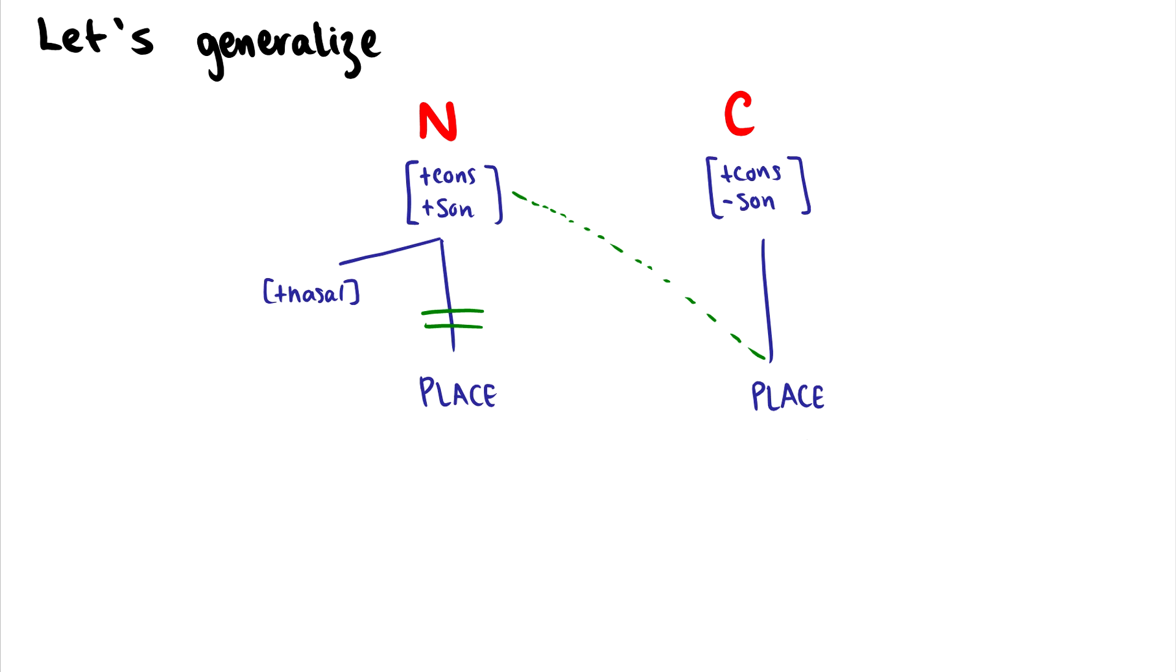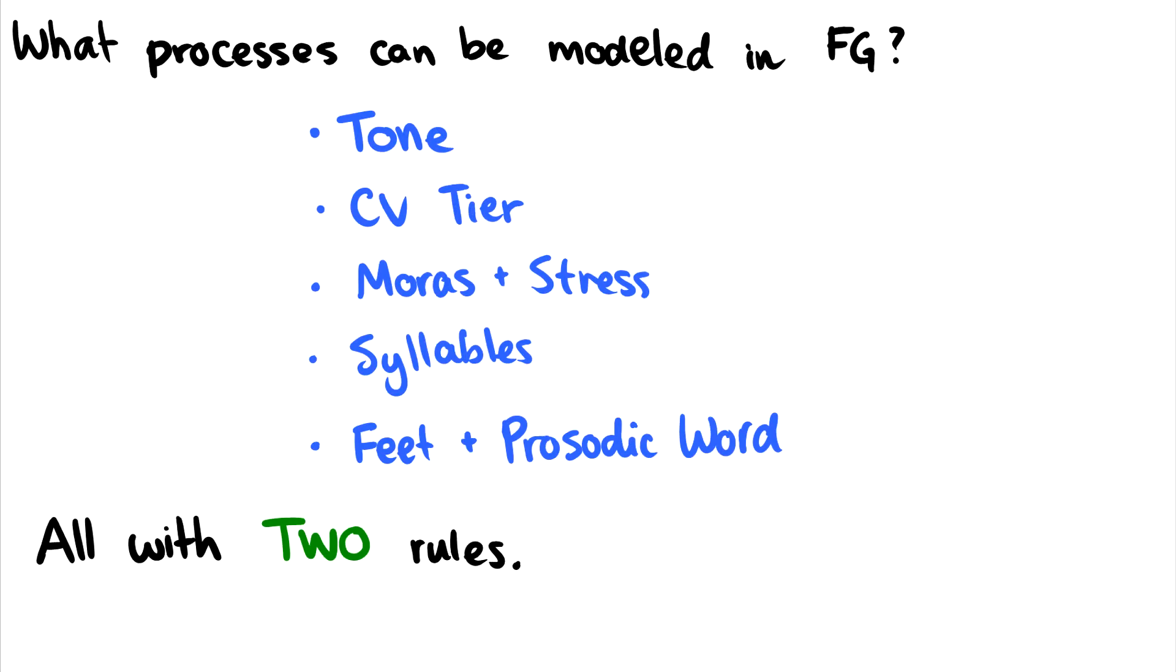But really, the question is, what can be modeled in FG? What can be modeled in feature geometry? And the answer is pretty much everything. These basic problems can. Tone can. The CV tier can. We'll talk about the CV tier, essentially just looking at strings of being consonants and vowels. We can talk about moras and stress. We can talk about syllable structure. We can even talk about feet and prosodic words. And we can do rules that target all of these things in feature geometry using two rules. Using spreading and delinking. So again, spreading is taking that feature and sharing it with a neighbor. And then delinking is cutting off those nodes in one of the sounds.